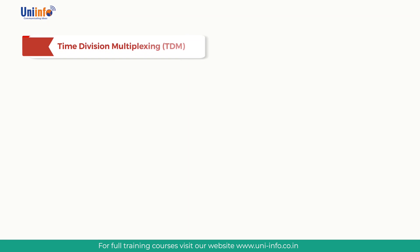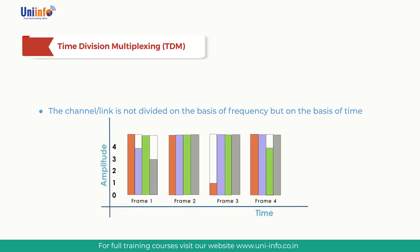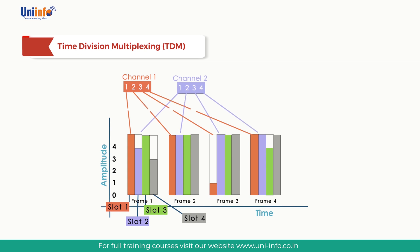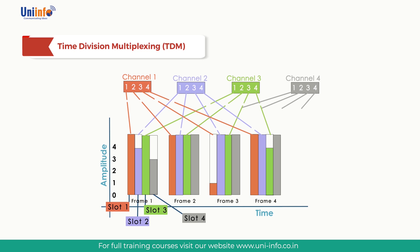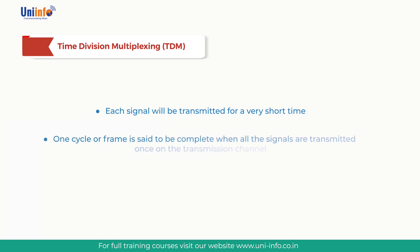Time Division Multiplexing is a digital multiplexing technique. In TDM, the channel or line is not divided on the basis of frequency but on the basis of time. Total time available in the channel is divided between several users. Each user is allotted a particular time interval called a time slot or time slice during which data is transmitted. Each sending device takes control of the entire bandwidth of the channel for a fixed amount of time. All signals are not transmitted simultaneously; instead, they are transmitted one by one, and one cycle or frame is completed when all signals have been transmitted once on the transmission channel.